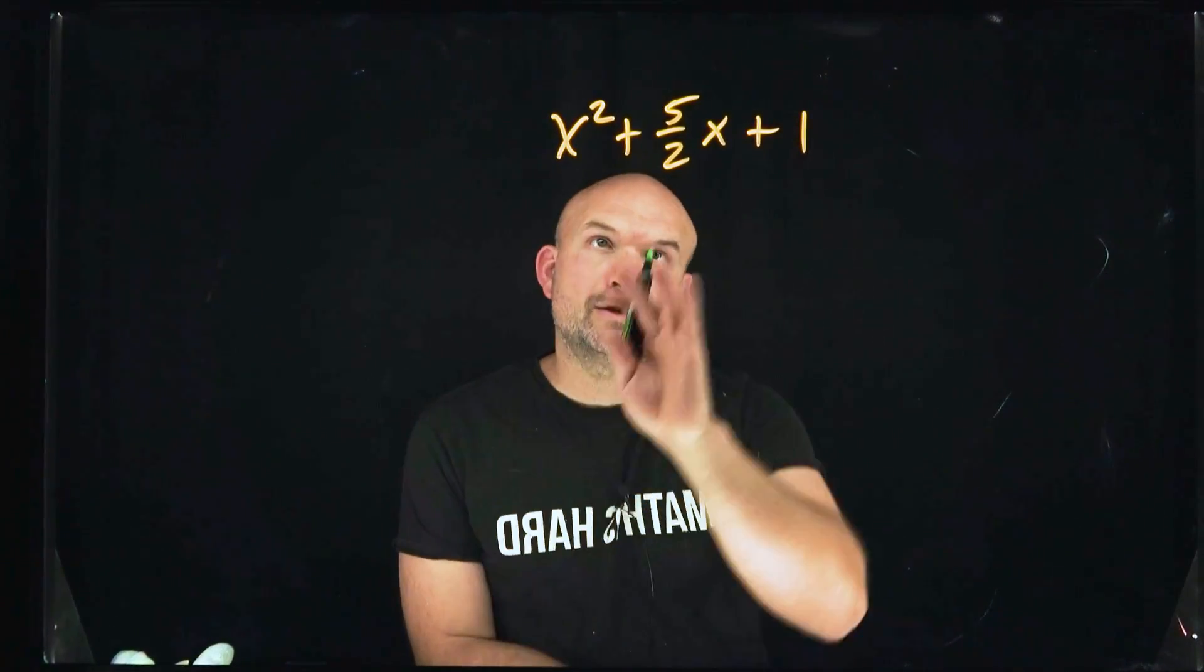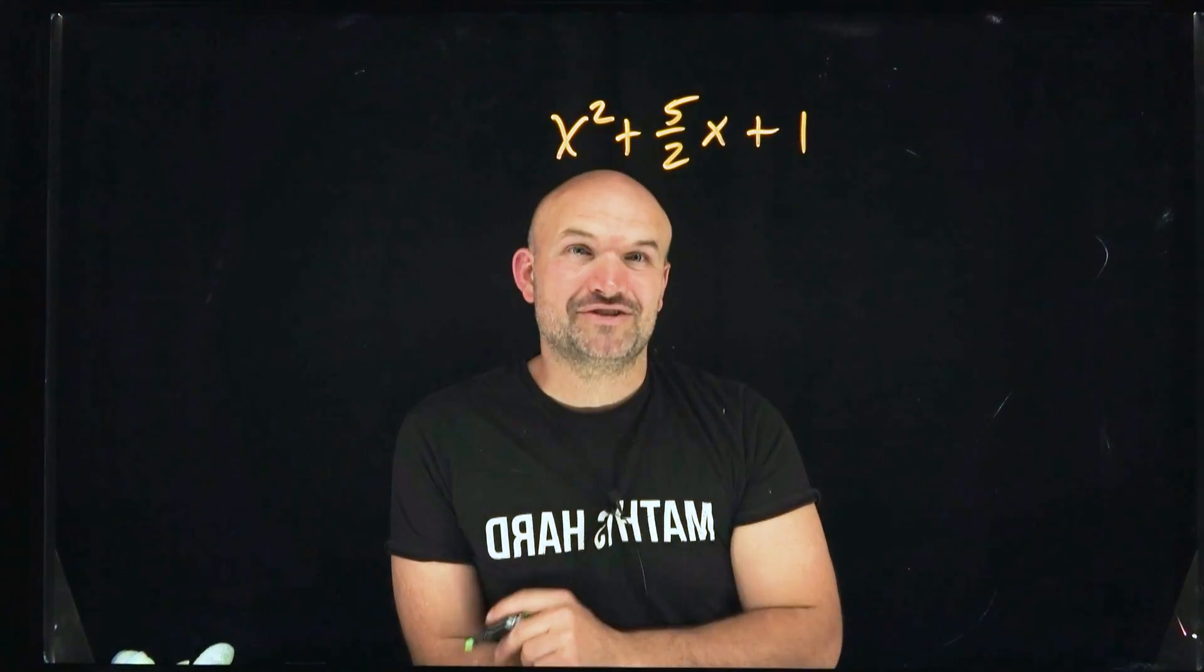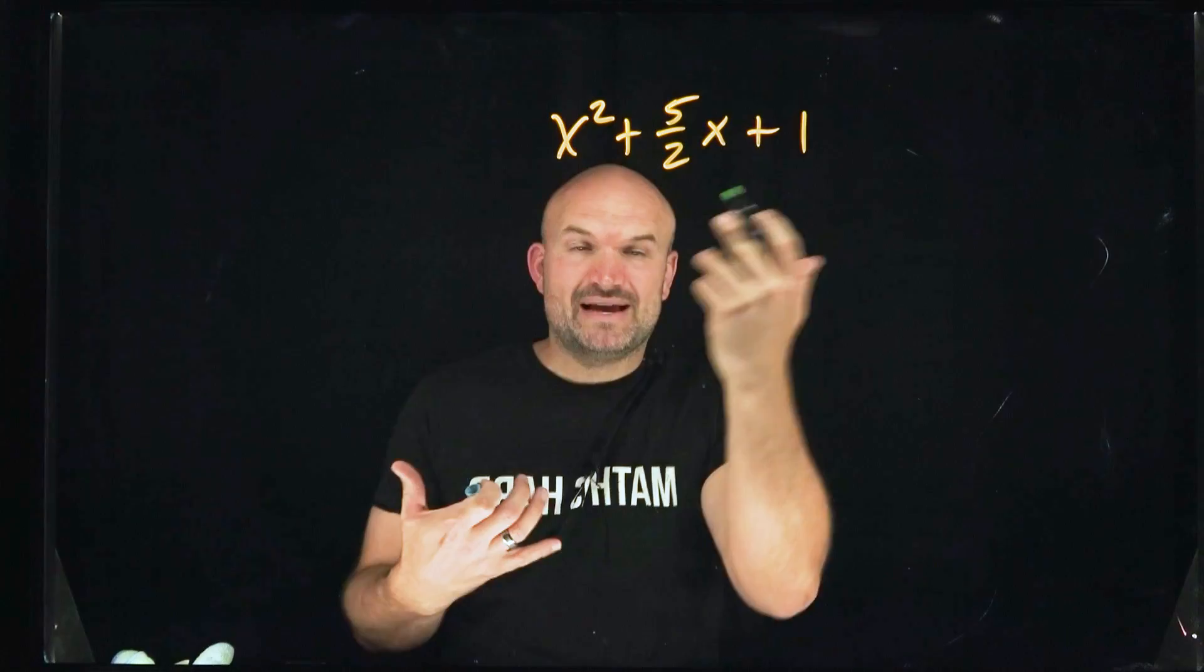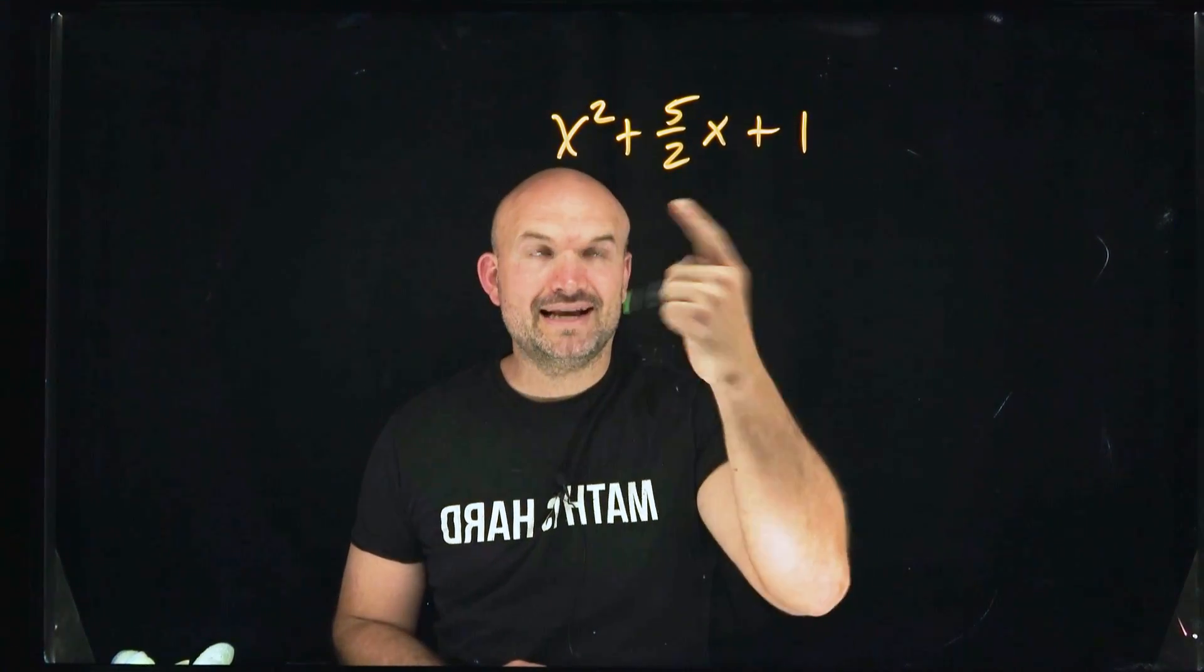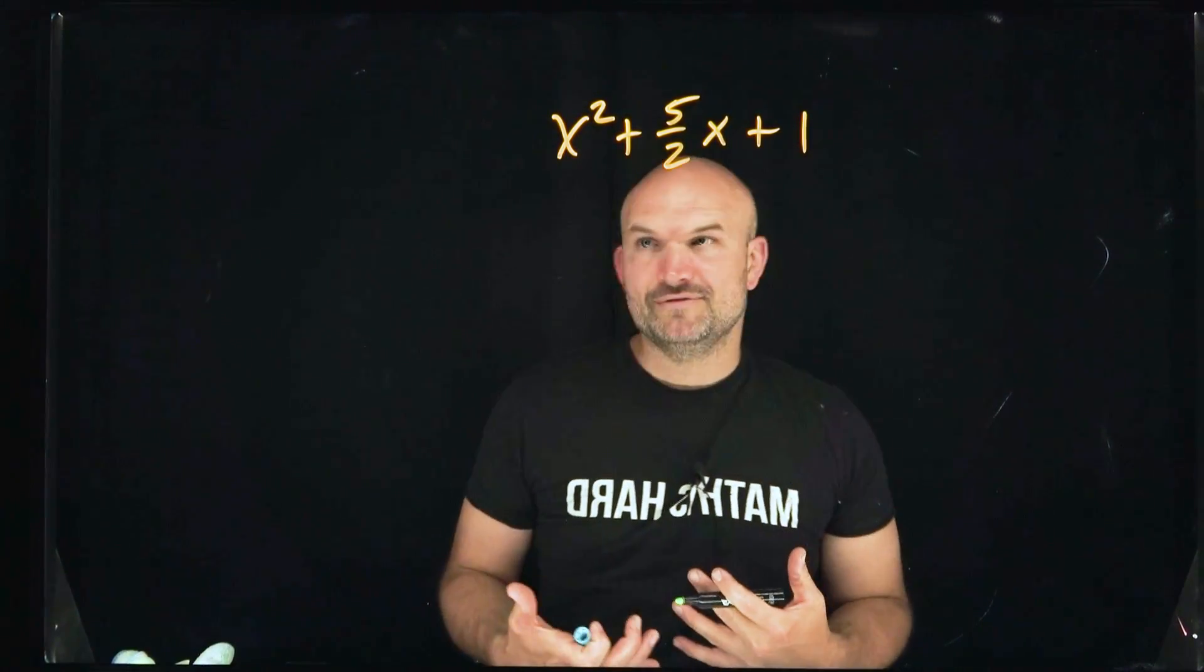So what do we do when we need to factor a quadratic trinomial with fractions? It gets kind of tricky because we don't like fractions. They make everything difficult. When we're trying to factor, especially when we have a quadratic trinomial, we're trying to identify what two numbers multiply to give us 1 and add to give us 5 halves. But when we start to deal with fractions, it just makes things a lot more confusing.